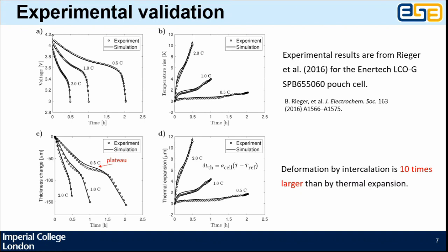In the thickness change, the model can predict the plateau, which is characteristic for battery cells using graphite anode. The deformation by intercalation is 10 times larger than by thermal expansion.